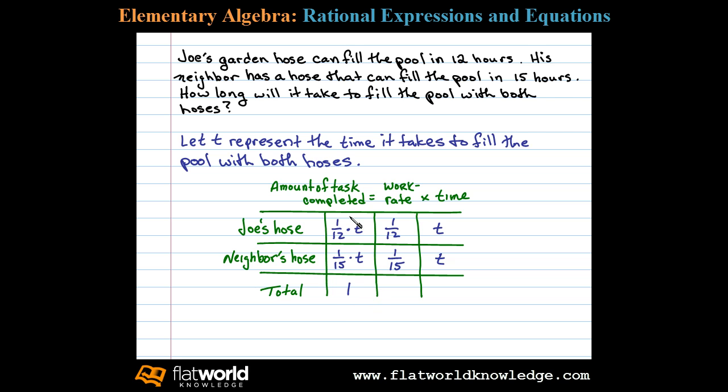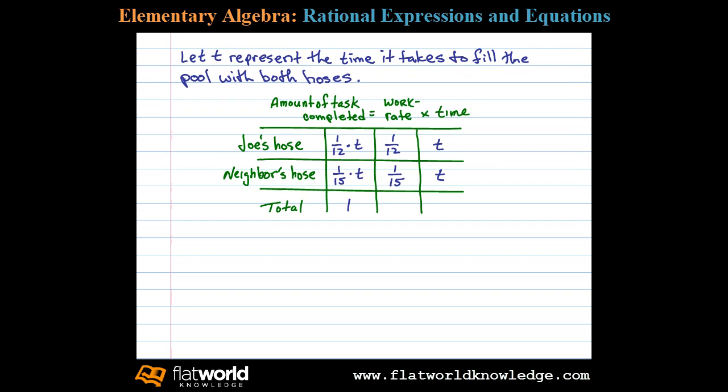So this column here, this first column defines our algebraic setup. In this case we have 1/12 T plus 1/15 T equals 1 or equivalently T over 12 plus T over 15 equals 1.